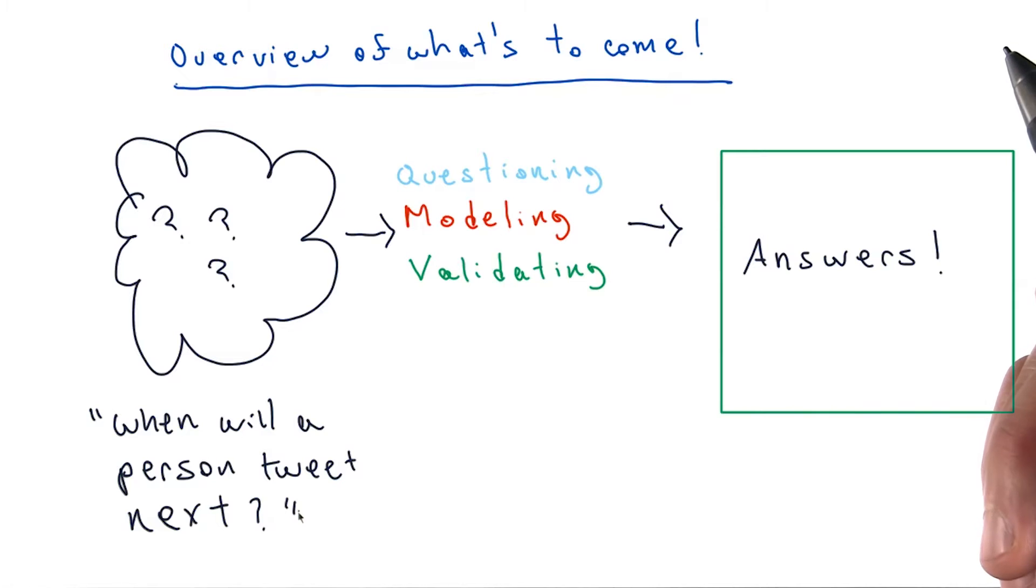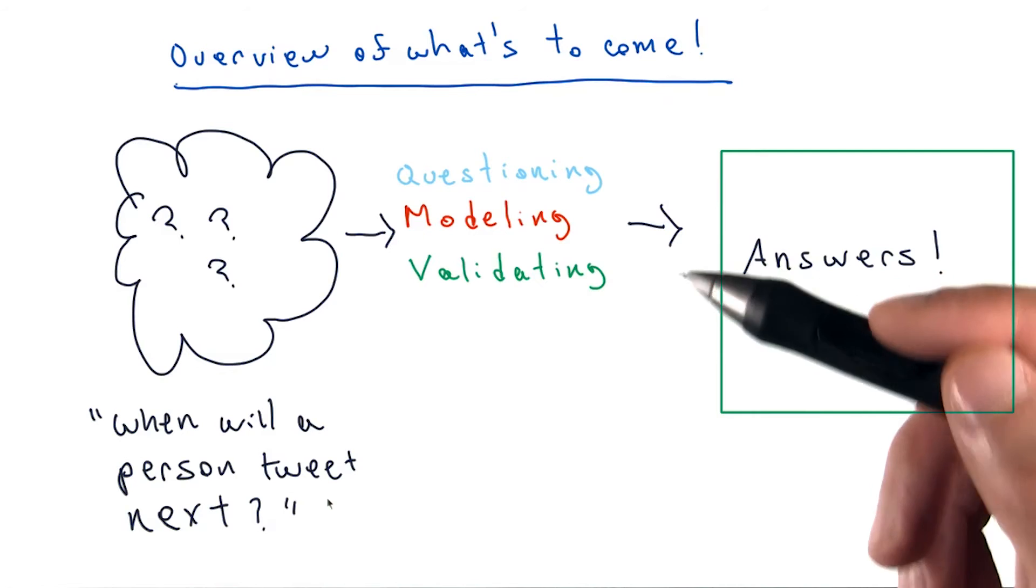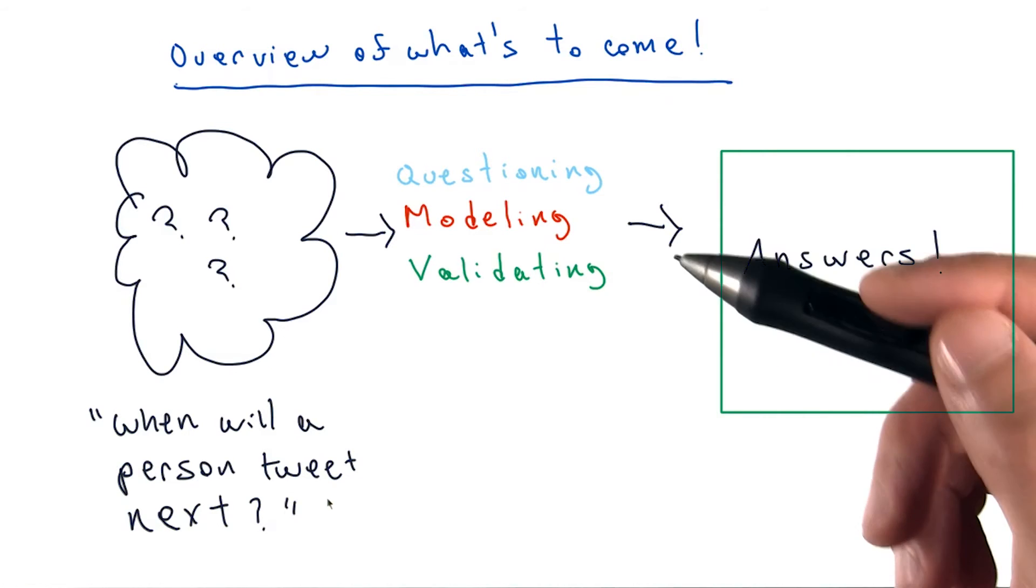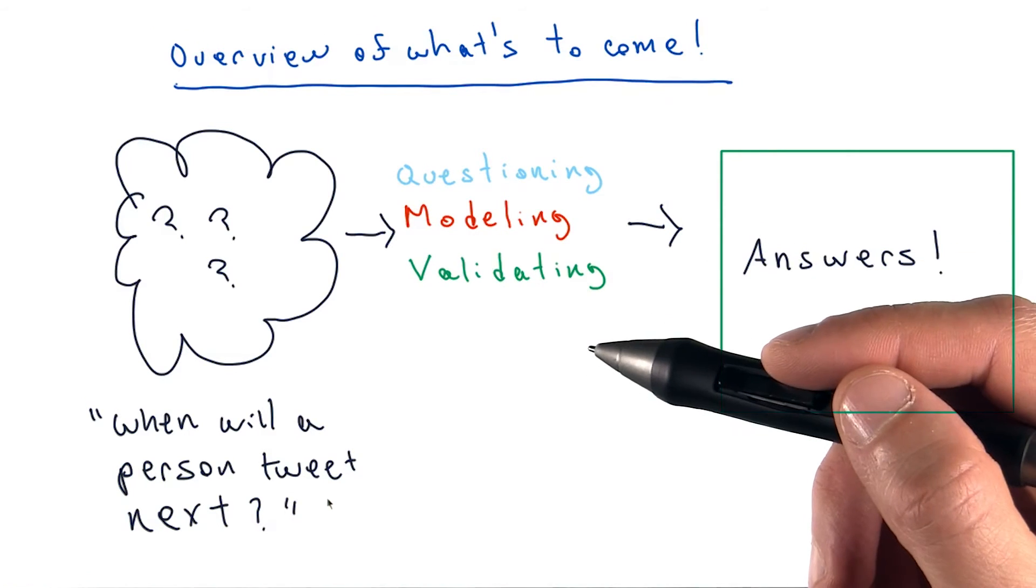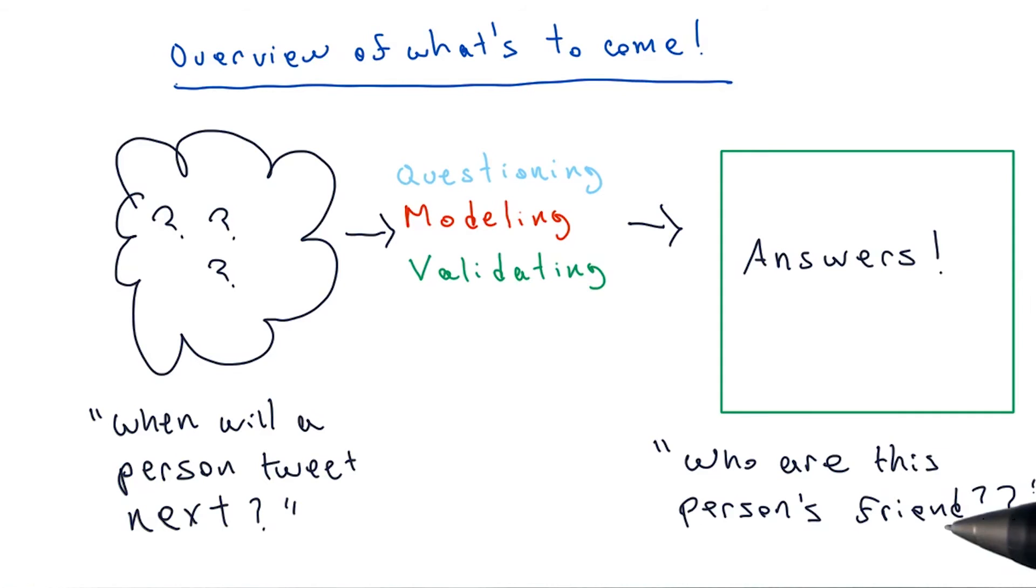For example, initially we think that the really important thing to ask is when will a person tweet next? But only after performing an investigation, we might discover that the more important question is, what is this person's immediate social network?